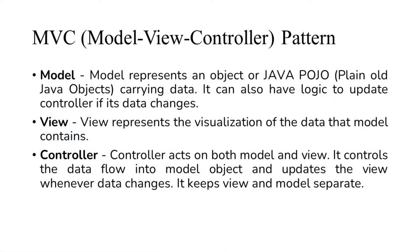MVC is a pattern where M stands for model, V stands for view, and C stands for controller. Model is a class, view is also a class, and controller is also a class.